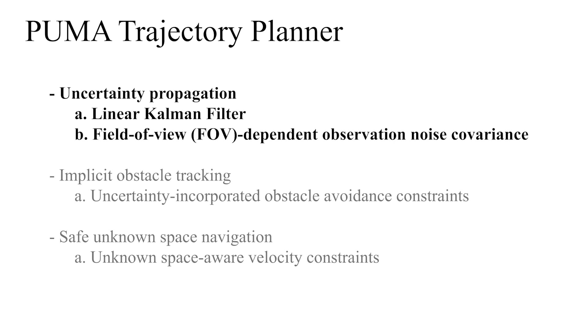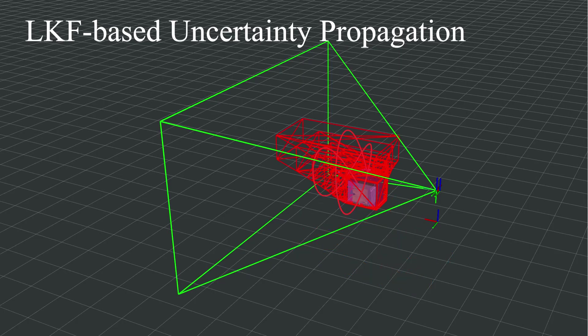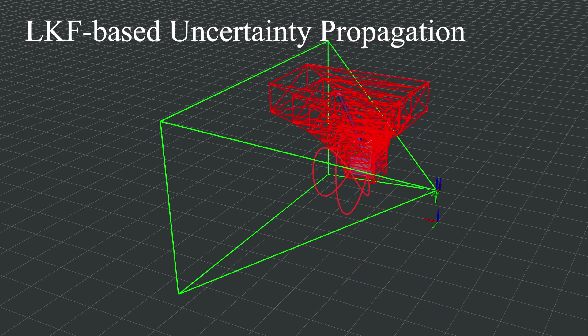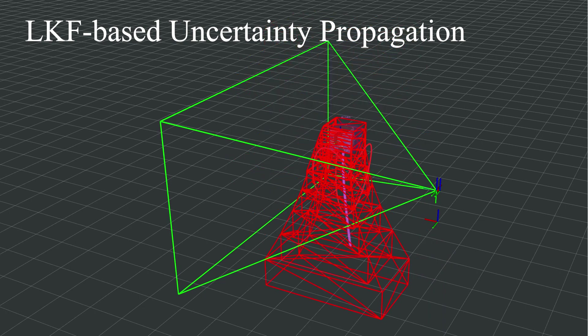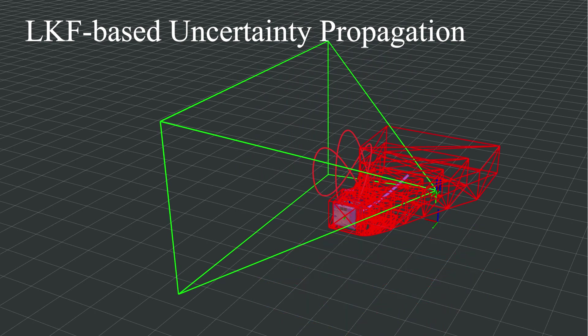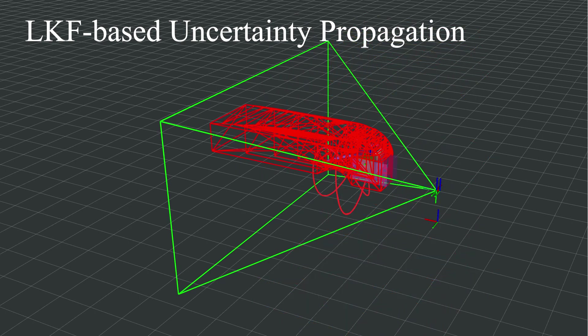Our uncertainty propagation uses a linear Kalman filter and the field-of-view dependent observation noise covariance. Here we visualize how uncertainty about the dynamic obstacle is propagated into the future based on the LKF and is used to inflate the bounding box for collision avoidance.